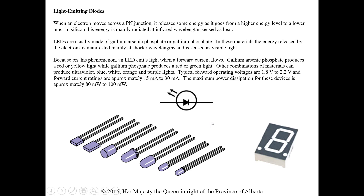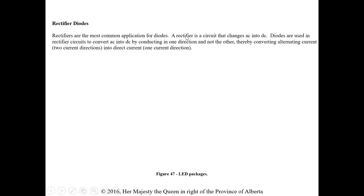Rectifier diodes are the most common application and are what our whole next ILM is about. They use rectifier circuits to convert AC into DC by conducting in one direction only, converting alternating current into direct current. In the next ILM we'll get right into the rectification process and that's where we'll use our diodes. If you've got questions, just let me know.